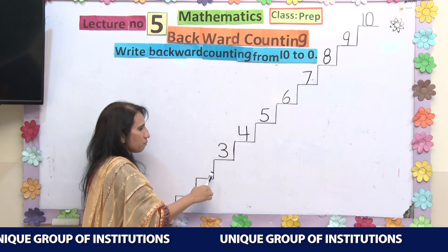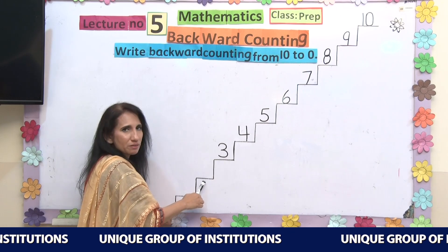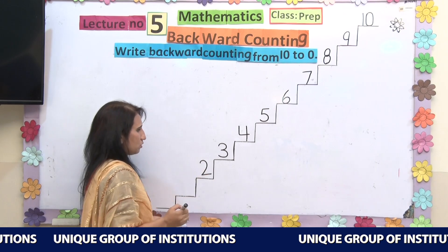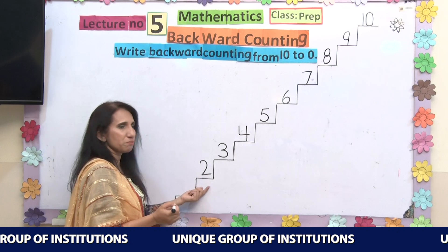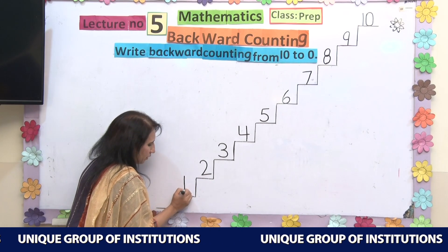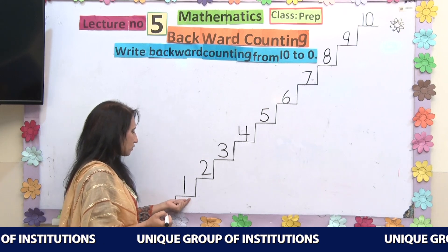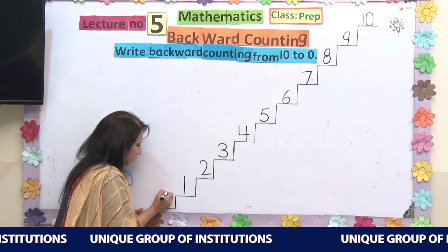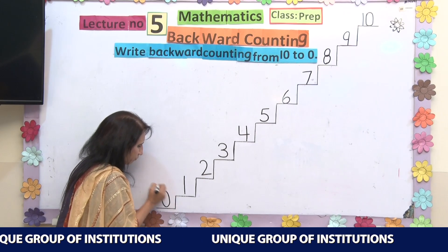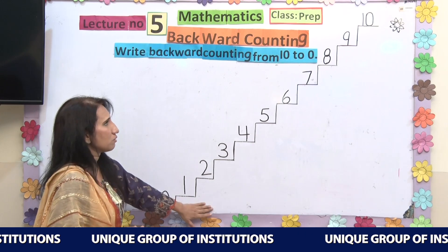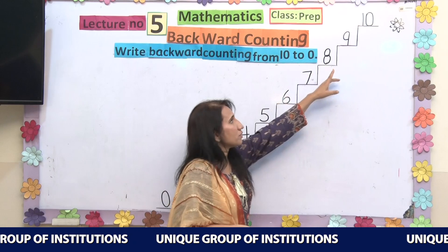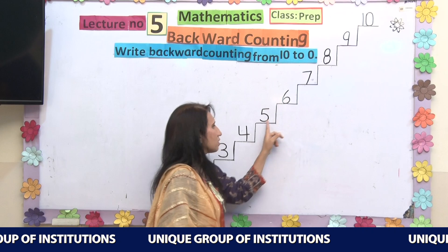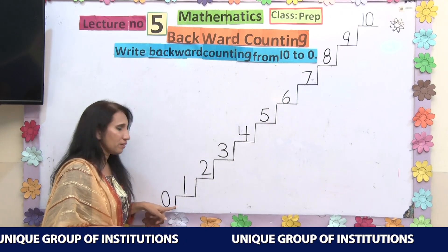Move again. On this step, what should be there? There should be number 2. And what comes before number 2? Before number 2, we have number 1. And what comes before number 1? This is our ending point. At the end, I will write number 0. So you have learnt the backward counting from 10 to 0. Just read it with me: 10, 9, 8, 7, 6, 5, 4, 3, 2, 1, 0.